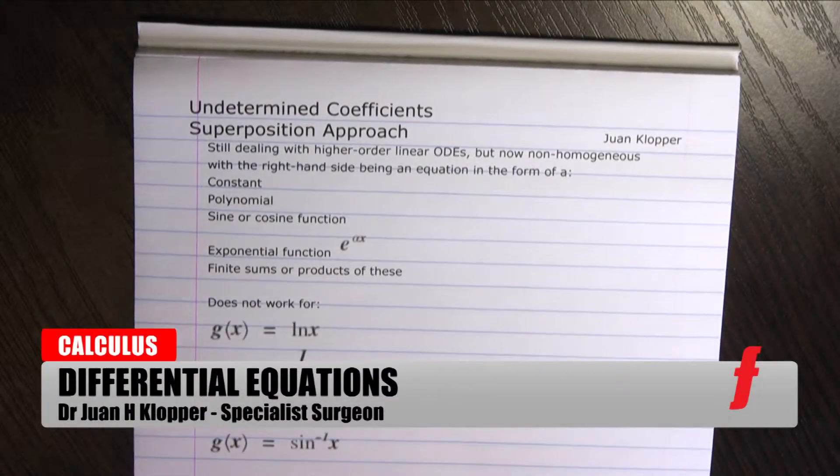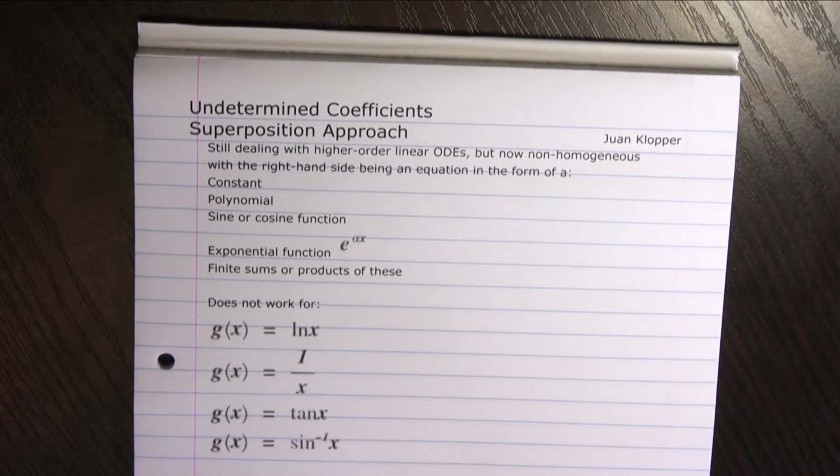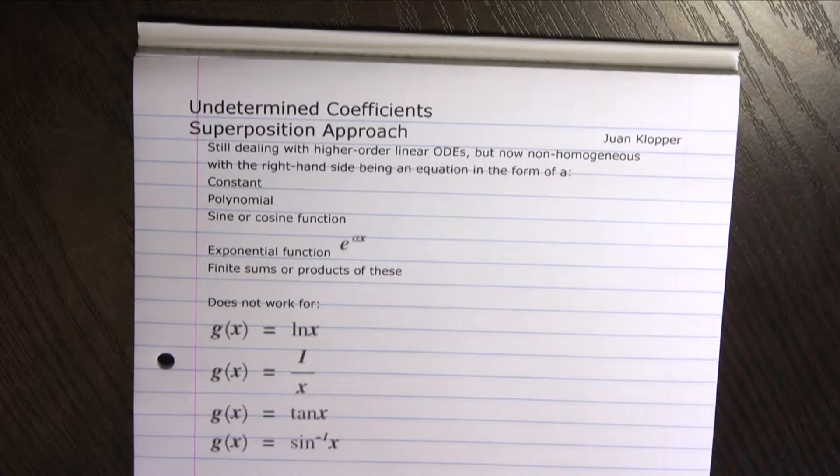Now we move on to the next section that is usually called undetermined coefficients using the superposition approach. What this boils down to is the fact that we're now going to move on to non-homogeneous linear higher order ordinary differential equations.